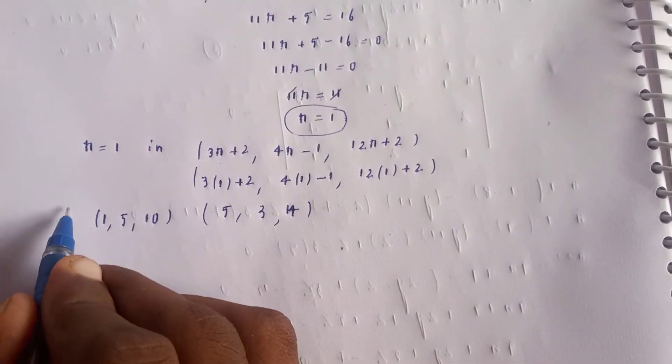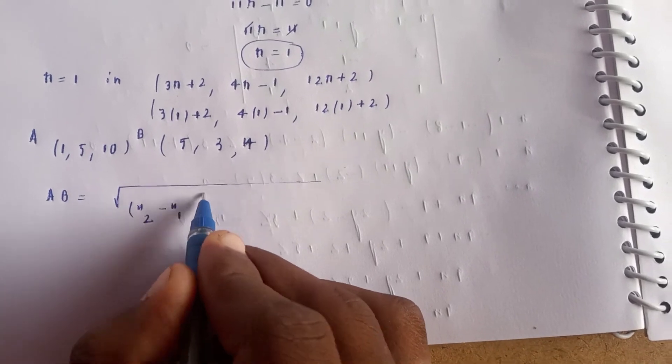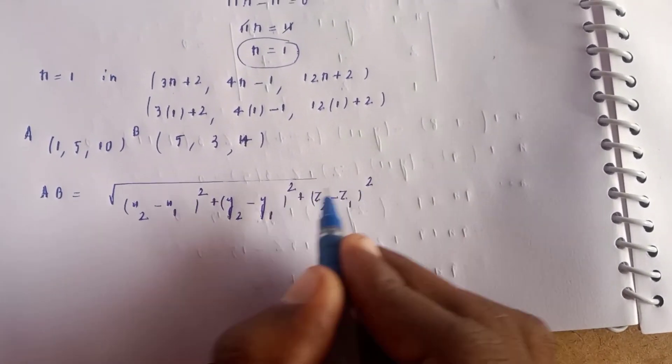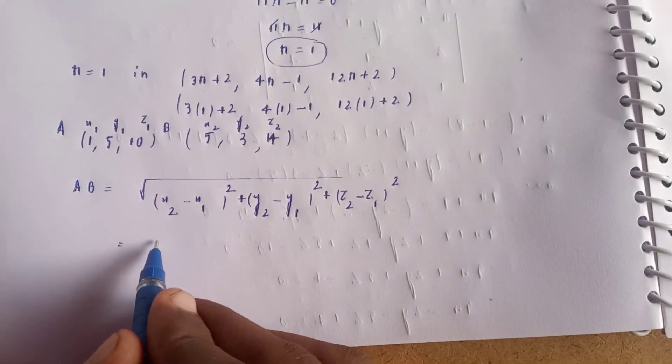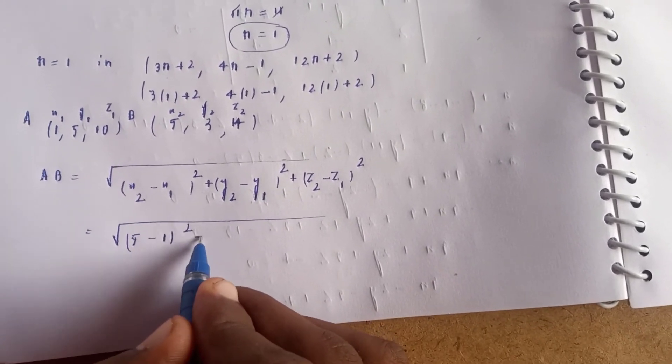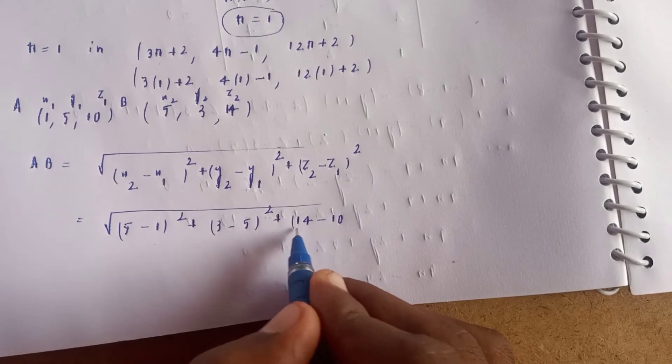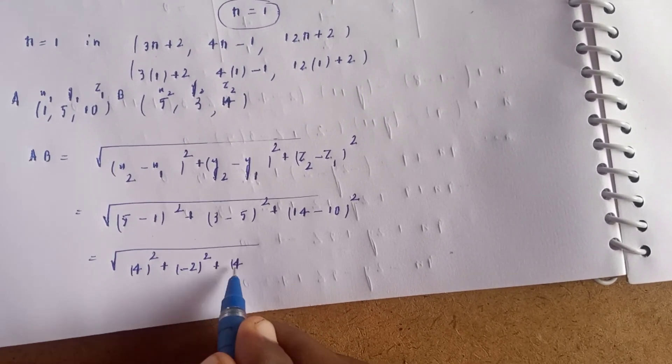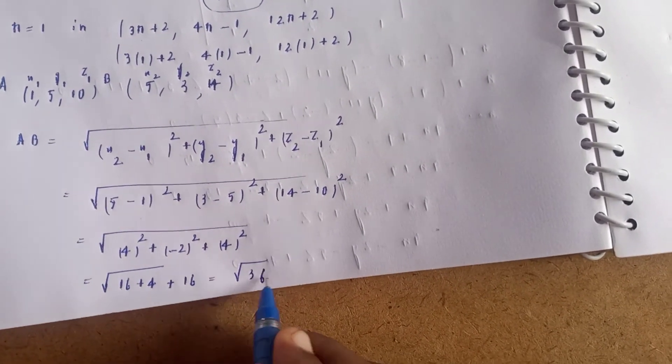The given point is (1, 5, 10). Now we find the distance using the formula: root of [(x2-x1)² + (y2-y1)² + (z2-z1)²]. Distance = √[(5-1)² + (3-5)² + (14-10)²] = √[16 + 4 + 16] = √36 = 6. The distance is 6.